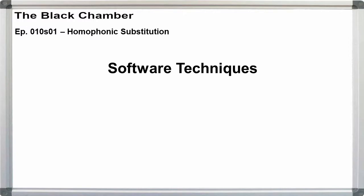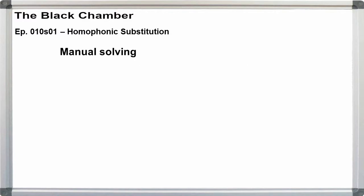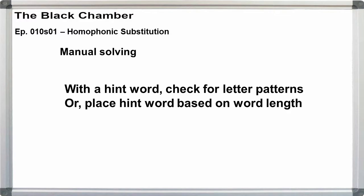Solving homophonic ciphers in software is incredibly easy with a brute force attack on the key. I have Python starter code available at the Black Chamber Patreon site for patrons at the higher tiers. With paper and pencil it can be a little more work, but I'll introduce the three methods I know of for manually solving these: placing a hint word based on patterns, placing a hint word five letters long or longer, and solving without a hint if the message is long enough.